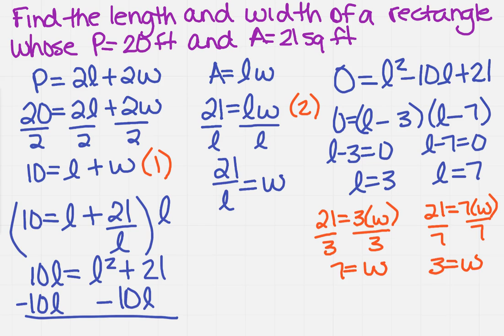When I entered L equals three and L equals seven into the area formula, I got seven and three - totally not what I was expecting. What that basically is telling us is that it doesn't matter which dimension is length and which is width. So basically we just need to say that it is a seven foot by three foot rectangle.